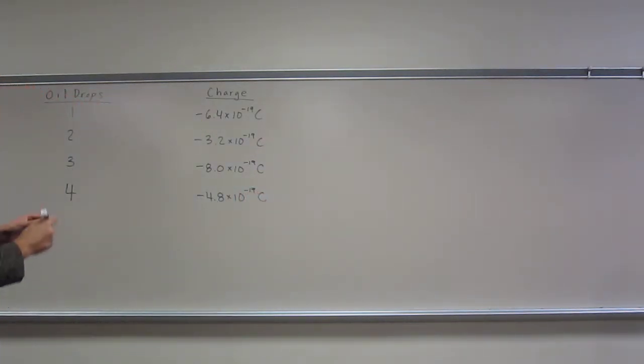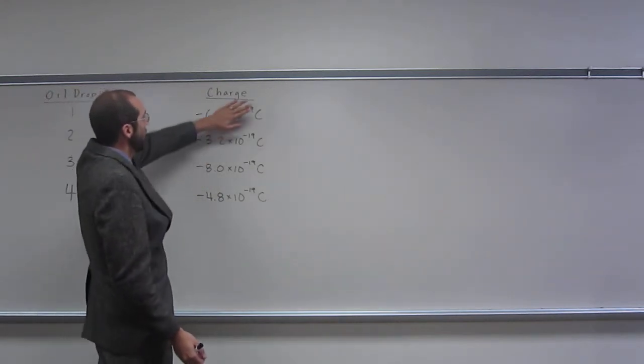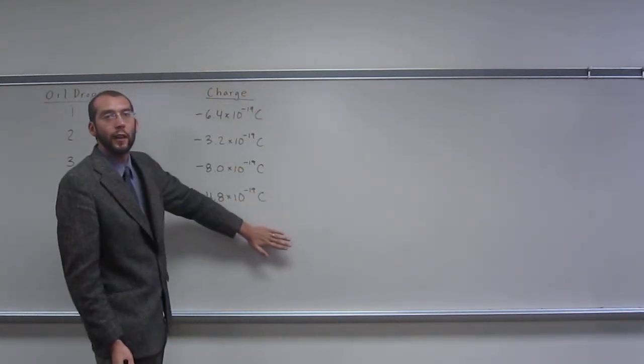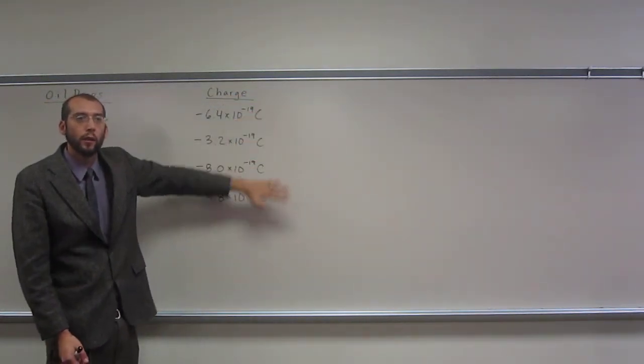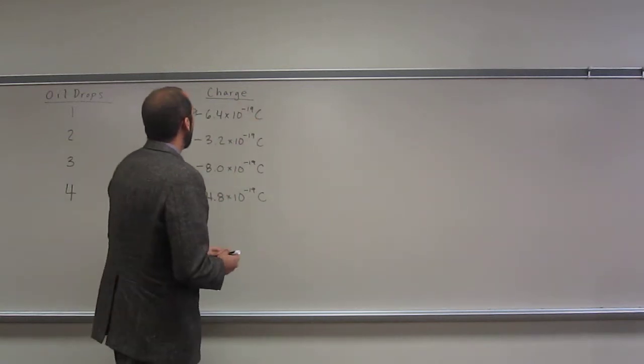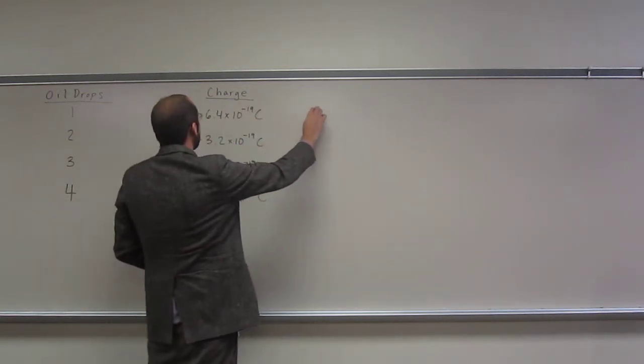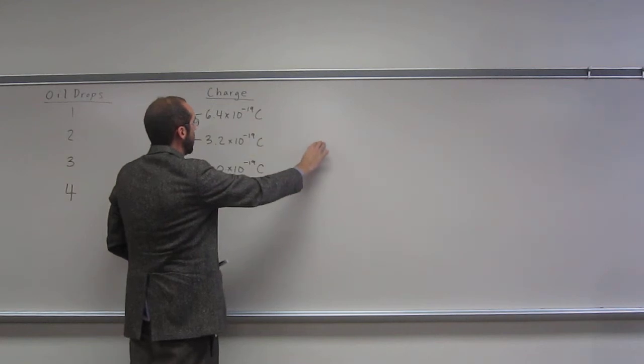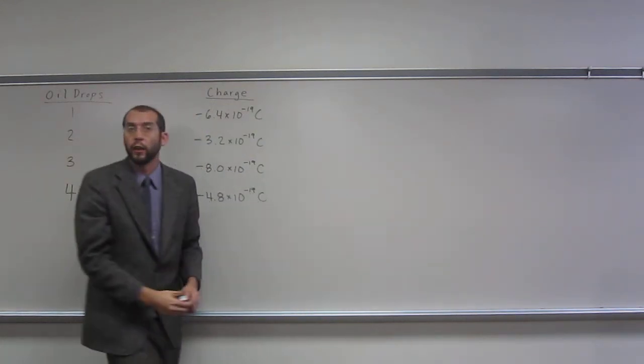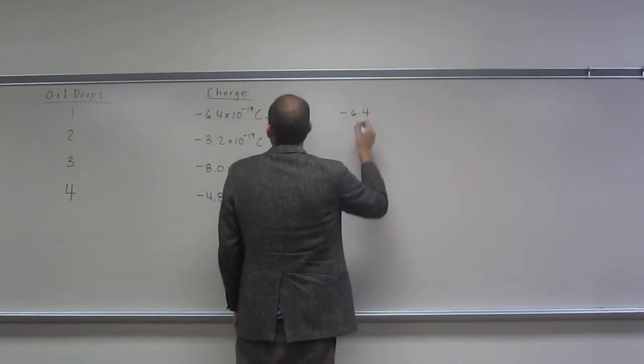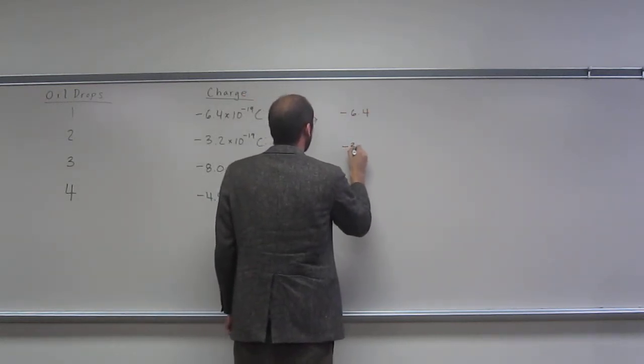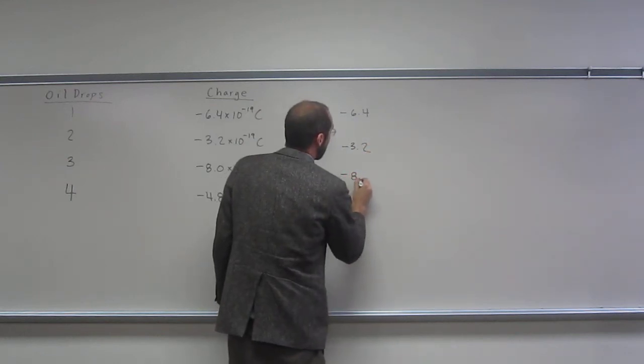Okay, so the way I would normally start to do a problem like this is to look at what the smallest number is. Stepping back, we see that all of these are 10 to the negative 19th Coulombs, so we can kind of think about that part of the chart. In actuality, we can think of these as negative 6.4, negative 3.2, negative 8.0, and negative 4.8. Let's write those down just to make ourselves recall that we think about them in this way now.